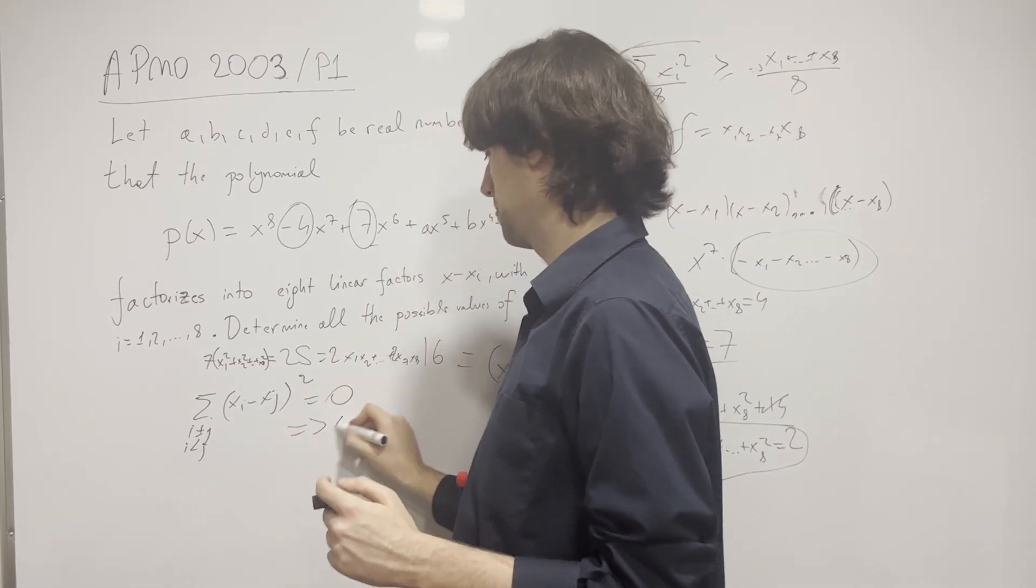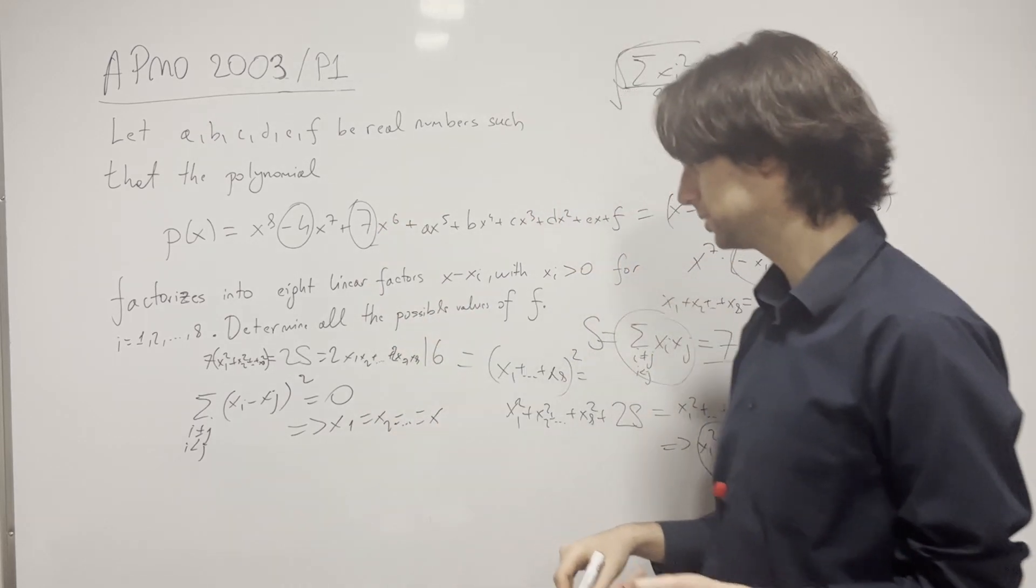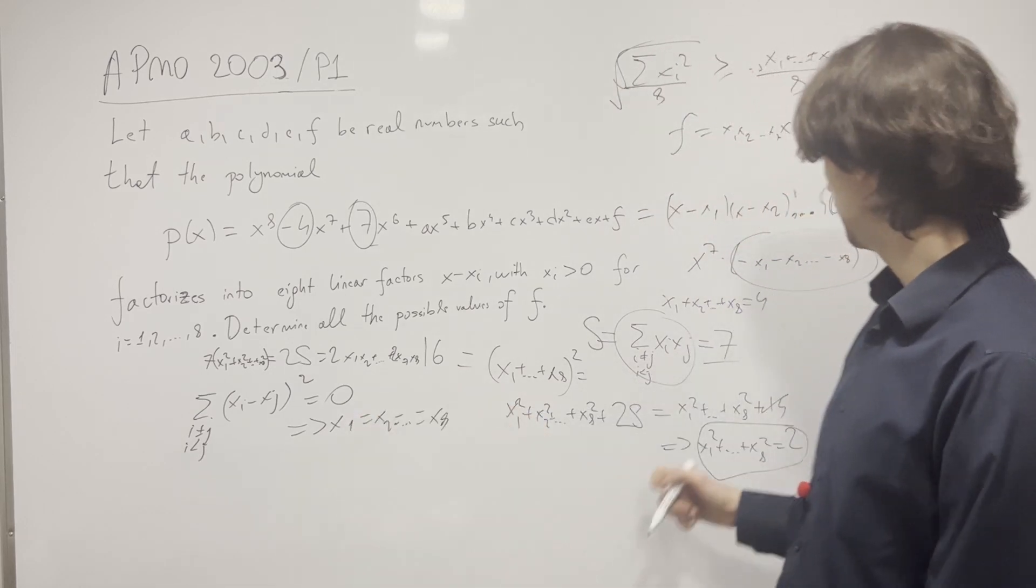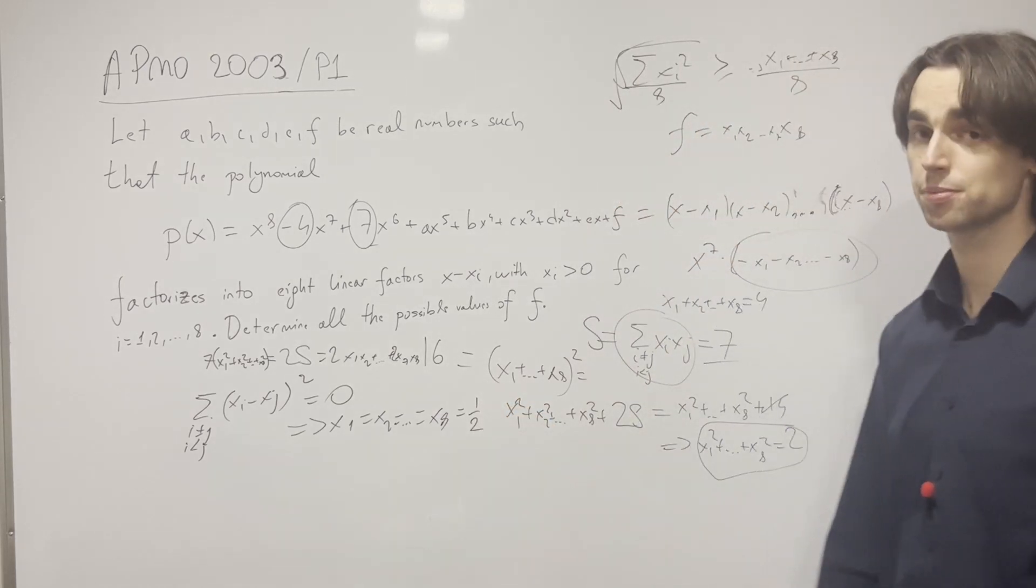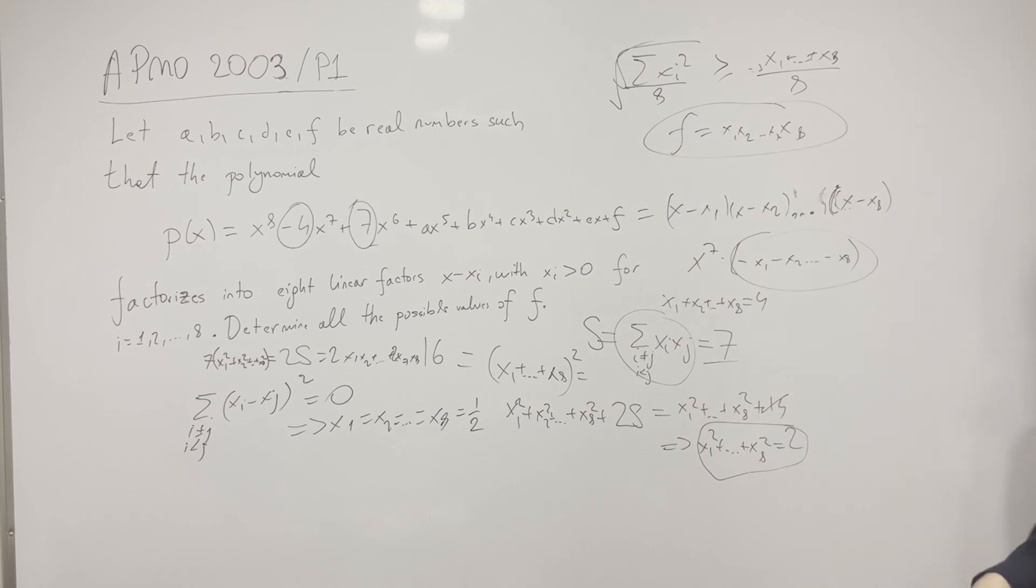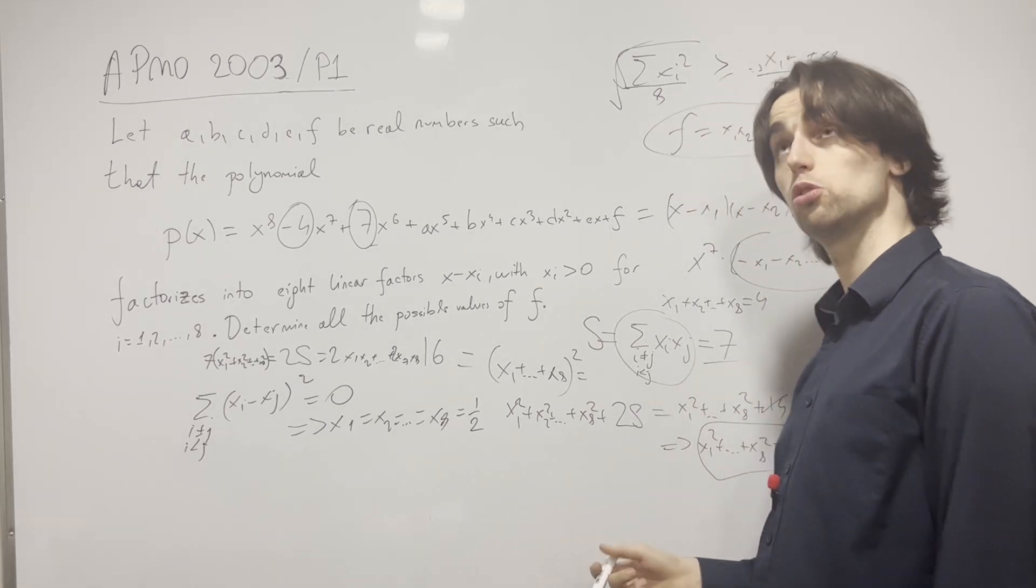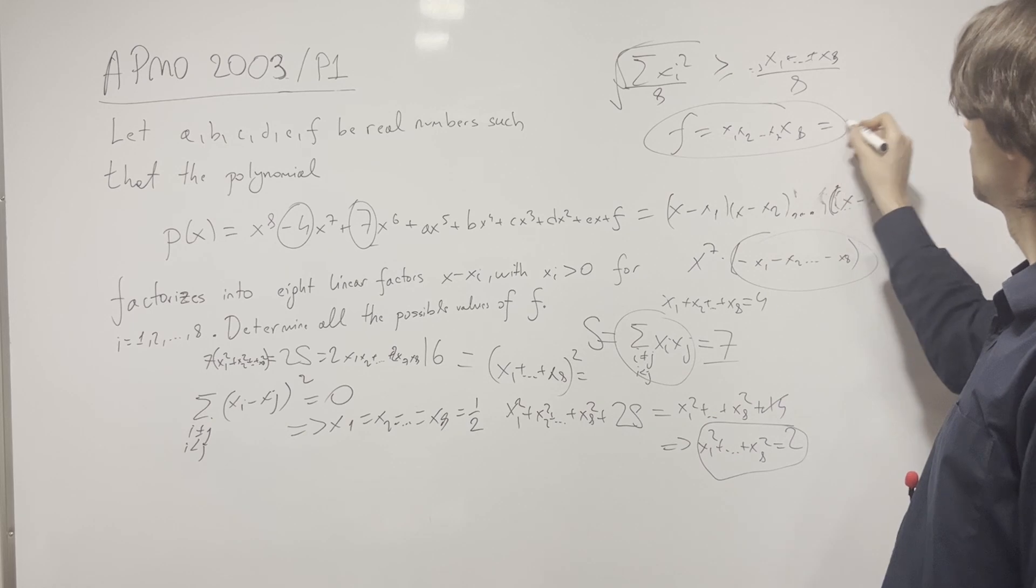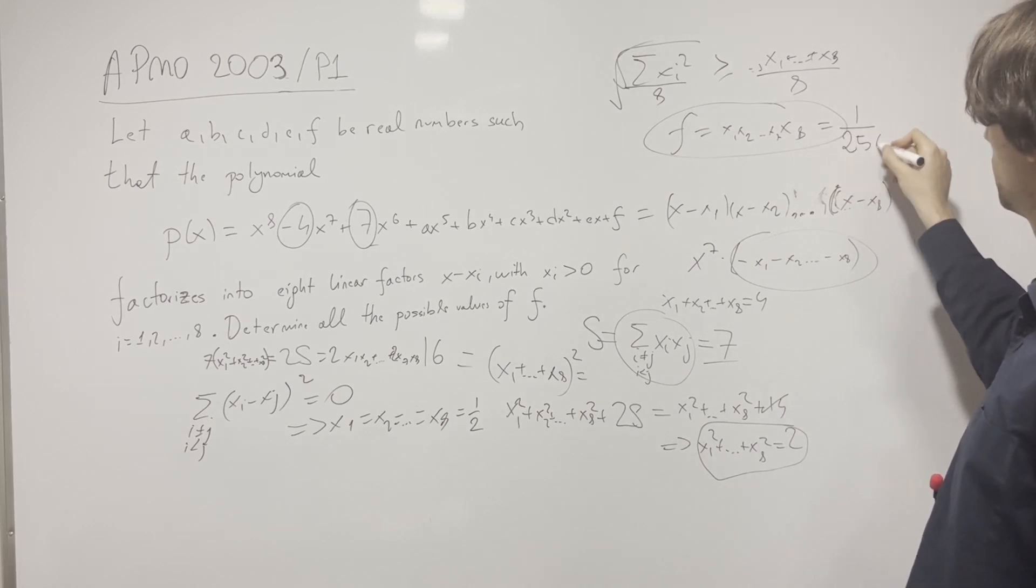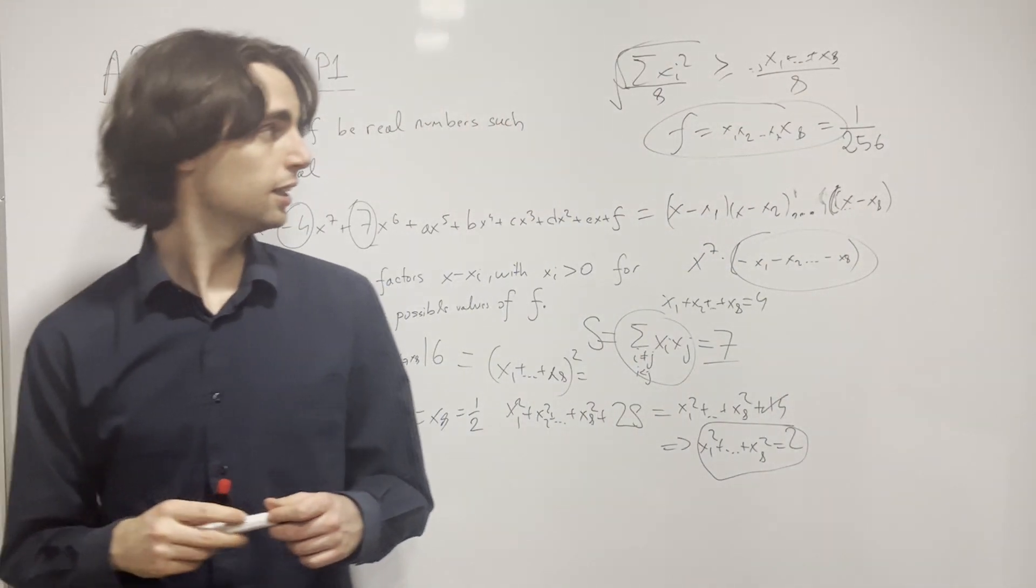And now this implies that x1 = x2 = ... = x8. This needs to hold true because these are positive real numbers. And given their sum equals 4, this means all of them equal 1/2. And then there's only one possible value of f, and that is (1/2)^8, which equals 1/256.